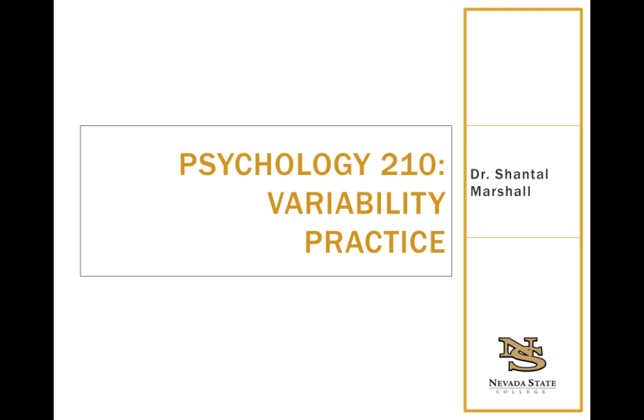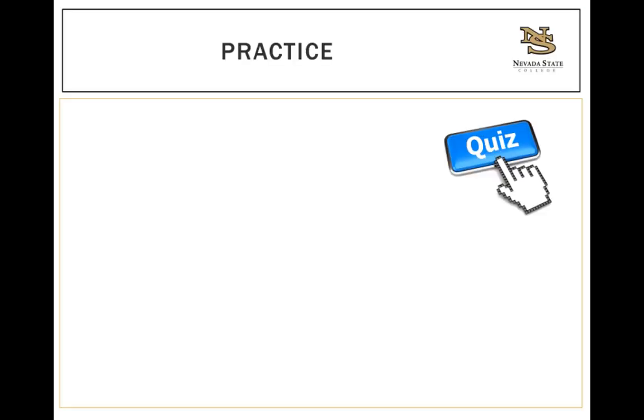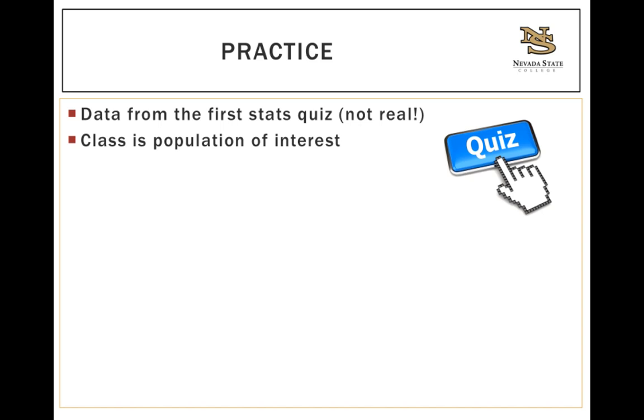Okay, now that you've learned the concepts behind variability, specifically standard deviation, we're going to jump into some practice. For your first practice problem, I want you to imagine that we have some data from the first stats quiz, but clearly this is not any real data from any of you or anybody you know. We're just making it up as we go along. In this particular case, the class is our population of interest, and this is important because this will let us know which set of formulas we'll need to use to figure out our variability.